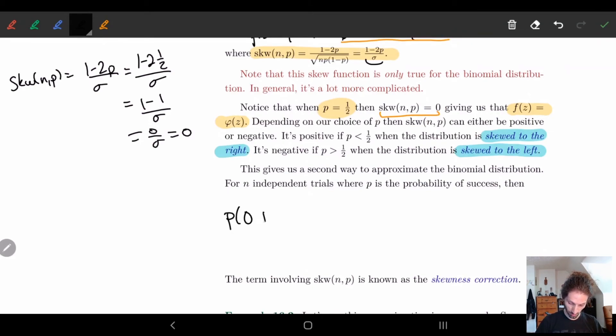So the probability from zero to b successes is approximately equal to φ(z). So here z is going to be equal to (b plus 0.5 minus μ) over σ.